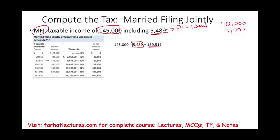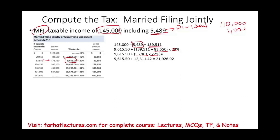$139,511 falls in the married filing jointly range of $83,550 to $178,150. The tax bill is $9,615 plus 22% of the amount in excess of $83,550. The excess is $55,961 × 22% = $12,311.42. So $9,615 plus $12,311.42 gives a total tax of $21,926.92 on the $139,511. We say this individual has a 22% marginal tax rate.